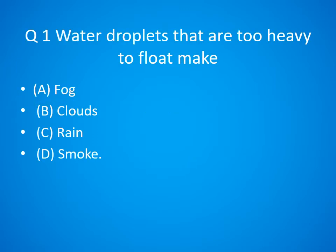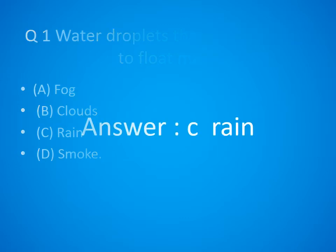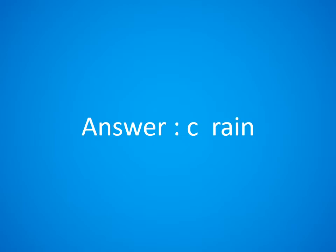Question 1. Water droplets that are too heavy to float make: A. Fog, B. Clouds, C. Rain, D. Smoke. The answer is C. Rain.